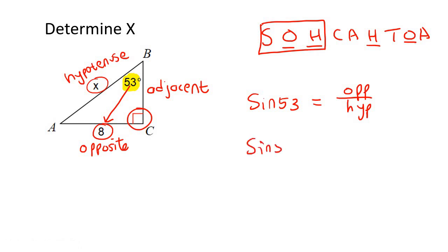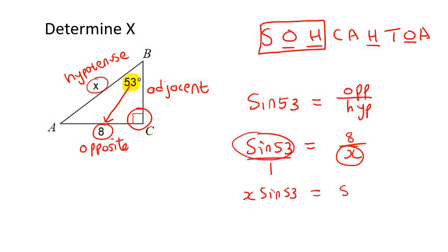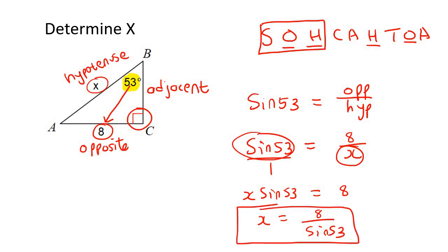Sin 53 equals to opposite over hypotenuse — filling in: sin 53 equals 8 over x. Using cross multiplication: x multiplied by sin 53 equals 8. To get x alone, you divide by sin 53. Note: here you don't say shift, second function, or inverse. If you calculate that, you should get x equal to 10.02.